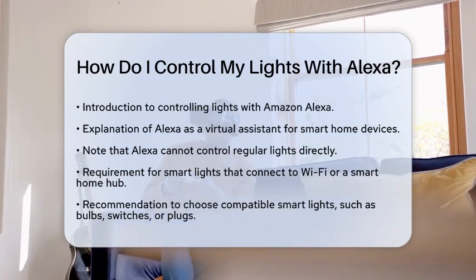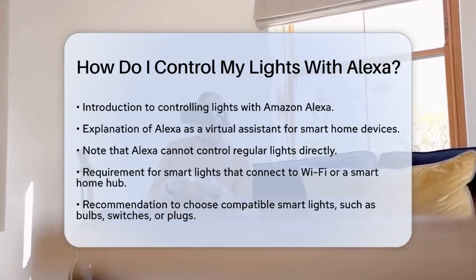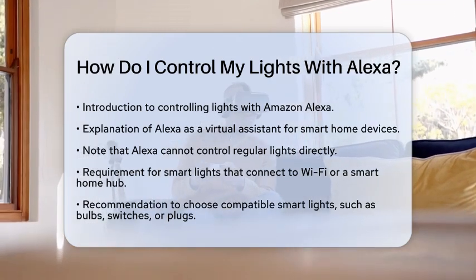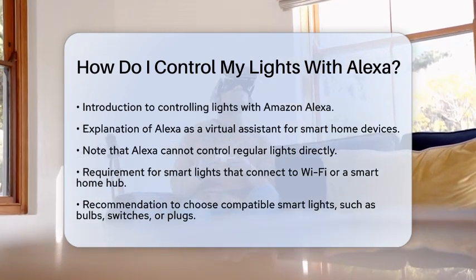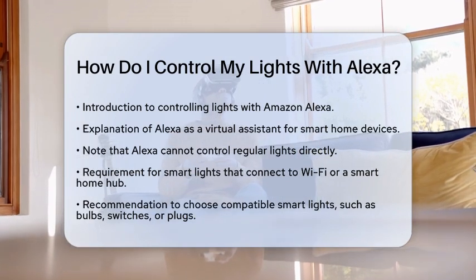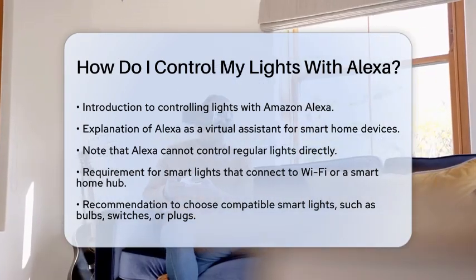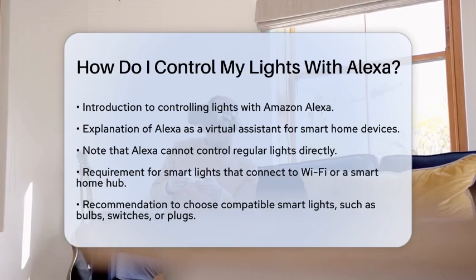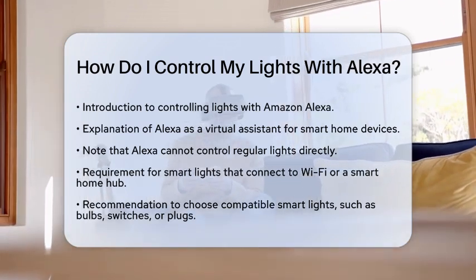To start, you will want to choose compatible smart lights. Look for smart bulbs, switches, or plugs that work with Alexa. Popular brands include Philips Hue, TP-Link Kasa, and Linkin. These devices connect through Wi-Fi or other local protocols and are certified to work with Alexa.